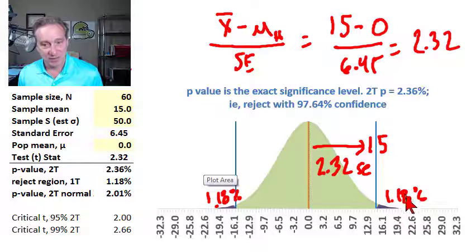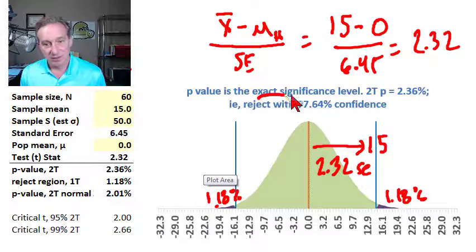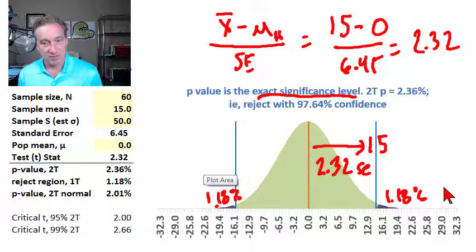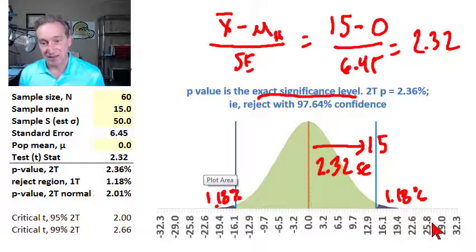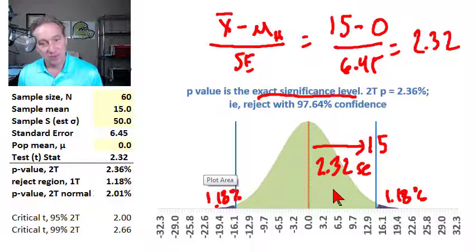That's the p-value, which I think the best definition of that is that's the exact significance level. What's that mean? It's the lowest significance level at which we would reject the null hypothesis.